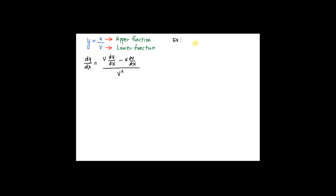For example, if I have y = 3x divided by (2x - 1), I have a fraction here. The upper function is 3x and the lower function is 2x - 1. Using the quotient rule, dy/dx equals: first, copy down my lower function (2x - 1), multiply by the differential of my upper function — differentiating 3x gives 3 — minus copy down my upper function 3x, multiply by the differential of the lower function — differentiating (2x - 1) gives 2 — then divide everything by v squared, that is (2x - 1)².